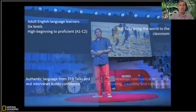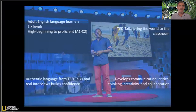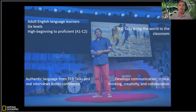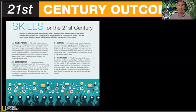The course develops communication, critical thinking, creativity, and collaboration skills, so all of those 21st century skills are at the forefront. In fact, all of the lessons — apart from the TED lesson — have a 21st century outcome. This is a recurrent sub-syllabus throughout the whole course, and each lesson ends with a final productive task that practices a 21st century outcome.